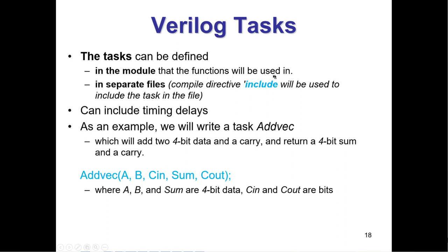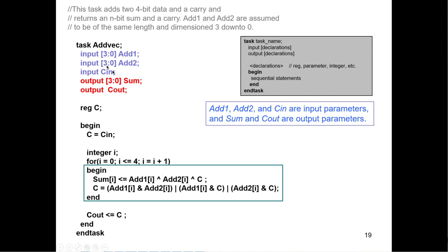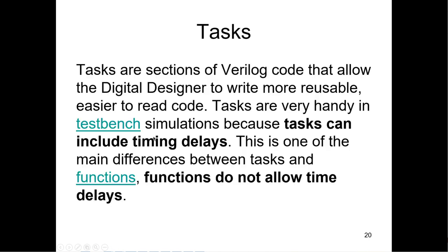You can define a task in the module it's going to be used in, or in a separate file, just like functions. Tasks can include timing delays, so they can often be used in test benches. Here's an example: add_vector, where A, B, and sum are four-bit data, and carry_in and carry_out are single bits — so this would be a little adder as a task. You have a parameter list with three inputs and two outputs: two of them are vectors and one is a single bit vector for sum and one for carry_out.